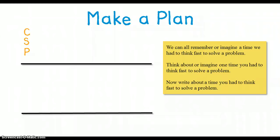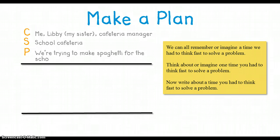And now I need to think about what story I'm actually going to tell. So for this prompt, I think I'm going to tell the story about a time that my sister and I had to make lunch for our school, but we couldn't do it because they didn't have the stuff we need. So my characters are going to be me, Libby my sister, and the cafeteria manager. The setting is going to be the school cafeteria, and the problem is we're trying to make spaghetti for the school, but there's no ingredients.